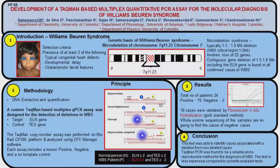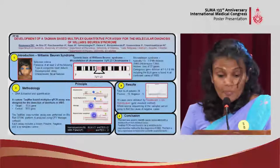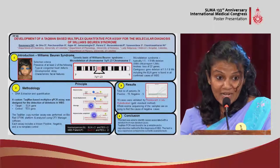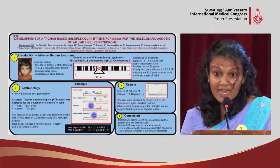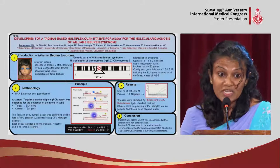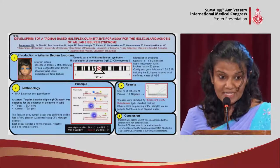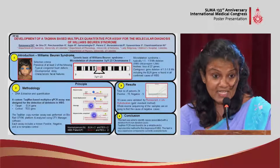Coming to the results, 19 patients were found to be positive and 5 were found to be negative. Ten cases were confirmed by fluorescent in situ hybridization. All 24 samples were sent for whole exome sequencing to find out the causes of the negative cases. In conclusion, this test is a reliable and cost-effective test, clearly able to distinguish deleted cases from non-deleted cases, and it is also very inexpensive.